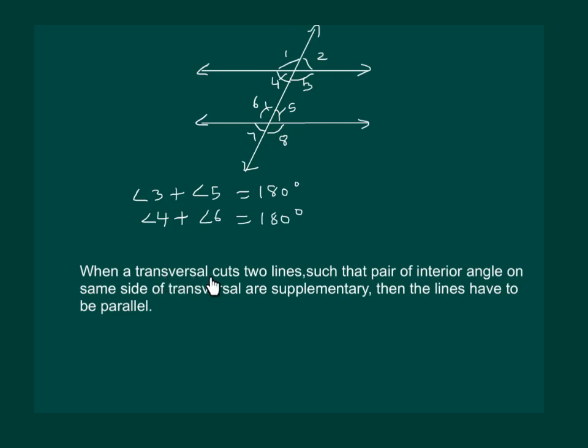As when a transversal cuts 2 lines such that the pair of interior angles on the same side of transversal are supplementary then the lines have to be parallel. So finally we have 3 different methods to prove that the given lines are parallel.